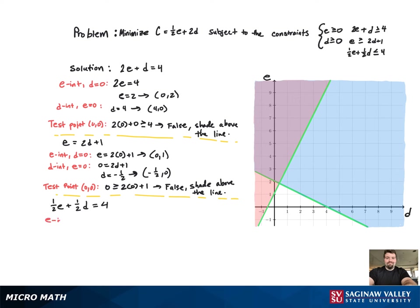Now the last inequality. Again, switch it to an equation, find the e and d intercepts, which you don't have to do. You can graph it using any two points, but it's just more convenient to find the intercepts.